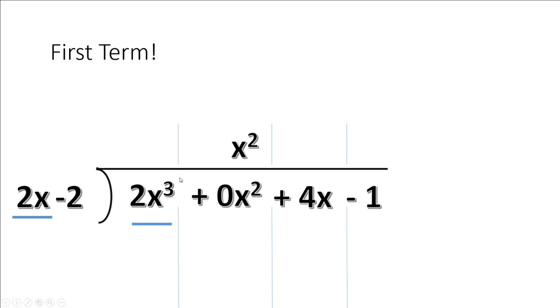We're going to divide to eliminate this 2x cubed. What do I have to multiply my first term here to get to the 2x cubed? x squared. Important: same terms, like terms lined up. The x squared goes here.